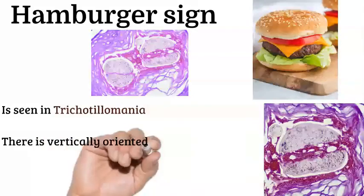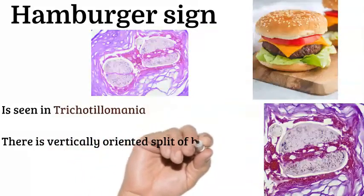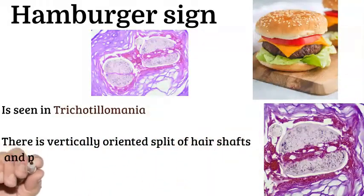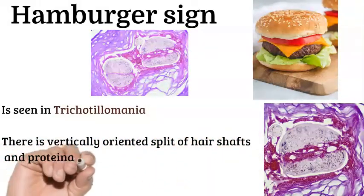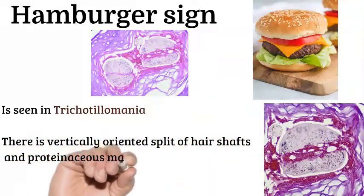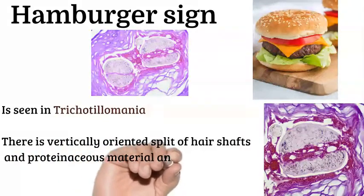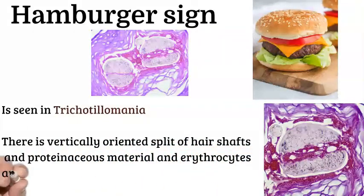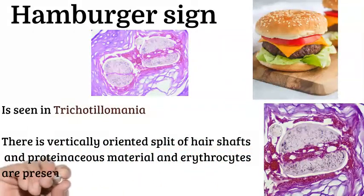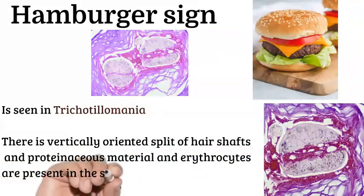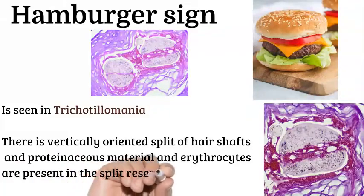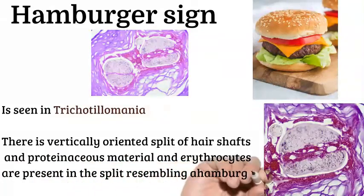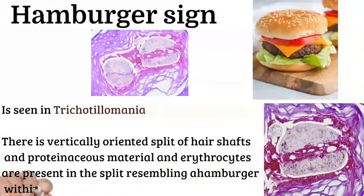Hamburger sign: as seen in this picture of a hamburger, this sign is seen in trichotillomania. There are vertically oriented splits of hair shafts, and proteinaceous material and erythrocytes are present in the split, resembling a hamburger within a pan.